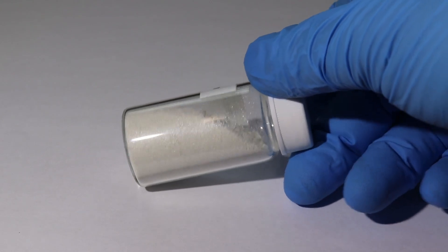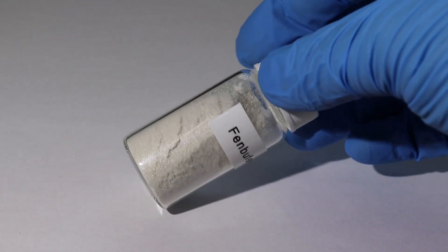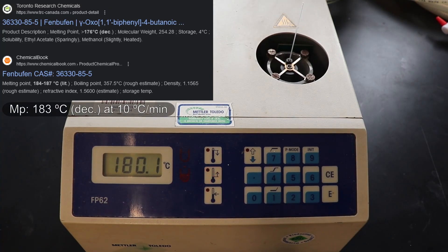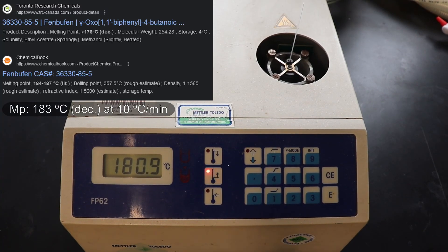Now that I have a product that seems to be decently pure, I'm going to have to run some tests to figure out if it actually is fenbufin. The first thing I tested was the melting point. Now the literature lists the melting point between 184 to 187 degrees Celsius.